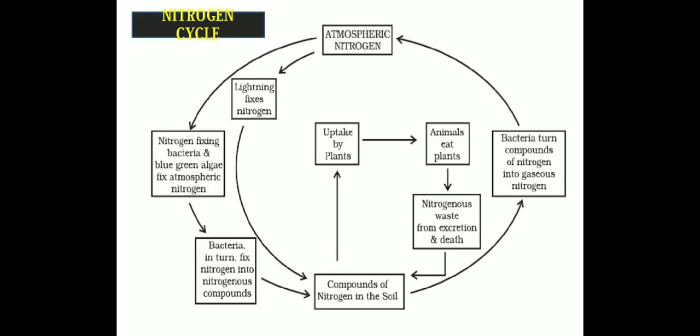The next diagram, also given in your NCERT books, shows the nitrogen cycle. There are two cycles: in the first, nitrogen fixation by bacteria or blue-green algae fixes atmospheric nitrogen and converts it into nitrogenous compounds which mix into the soil. Then bacteria convert these nitrogen compounds back into gaseous form and liberate them into the atmosphere.